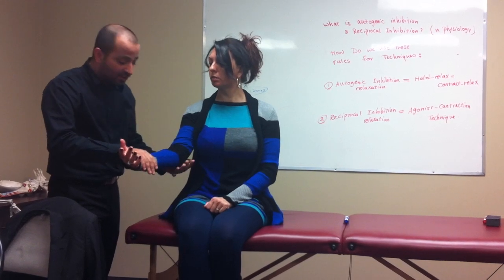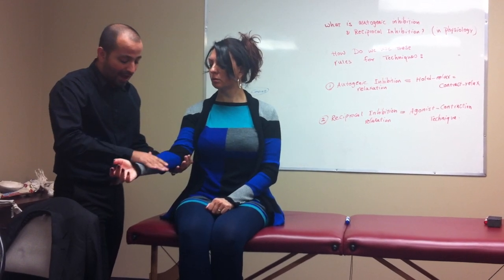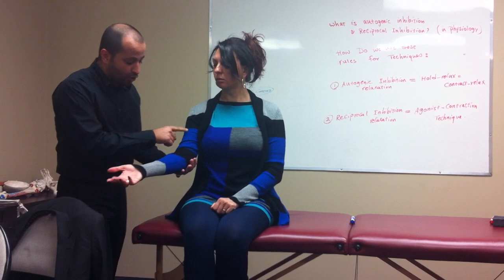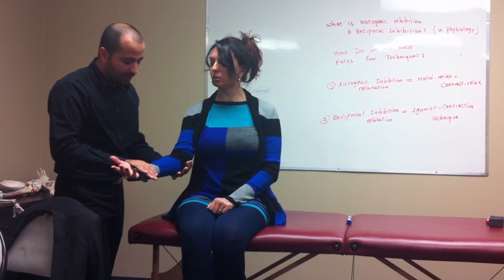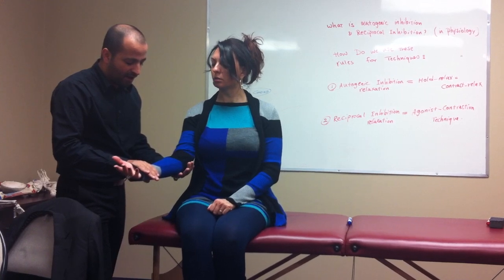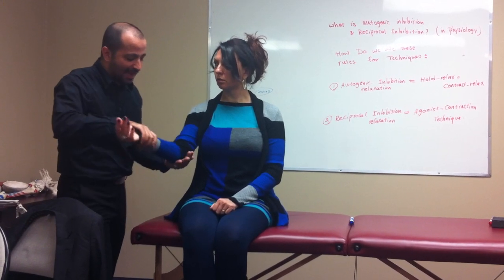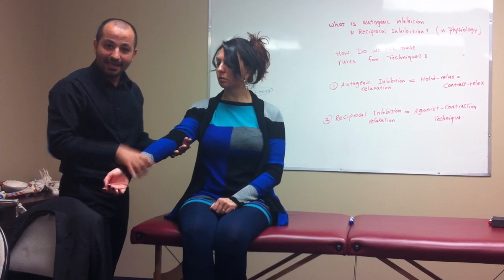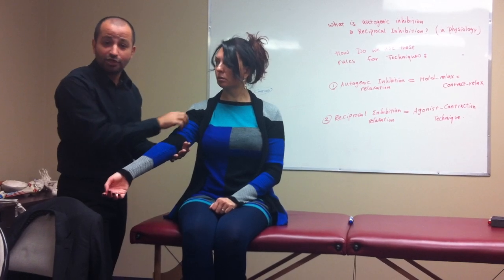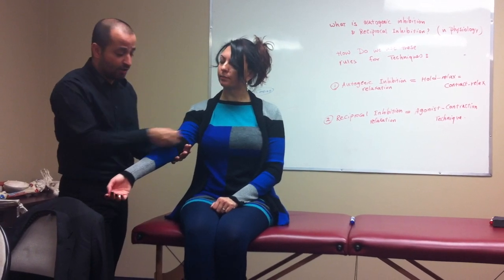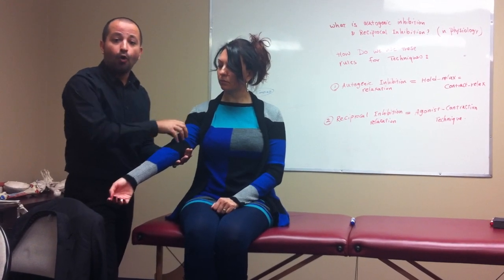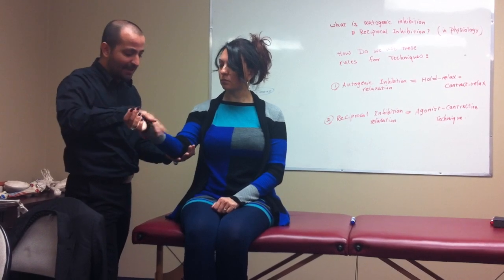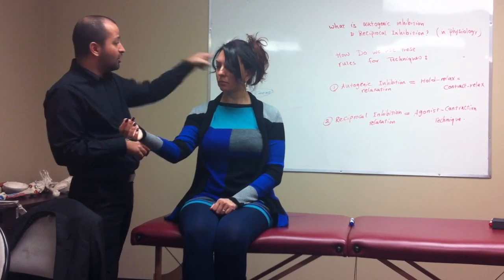Any time you want to do autogenic inhibition, you just isometrically contract the same muscle — push to my hand, hold it, one, two, three, four, five — and then this muscle is already relaxed. Now you can stretch it. That's the purpose of this technique: to stretch the muscle at the end. This is called autogenic inhibition relaxation, also called the hold relax technique, which is the same thing.